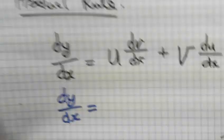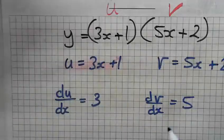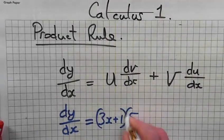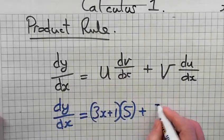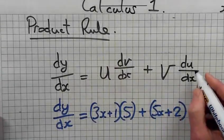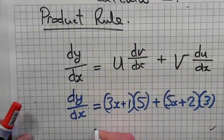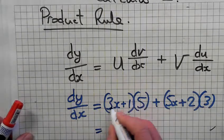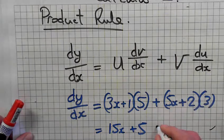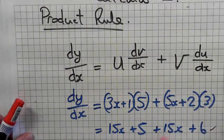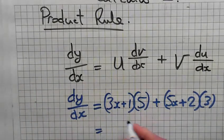On the next line: 5 times all of this is 15x plus 5. And 3 times all of that is 15x plus 6. So 15x plus 15x is 30x, plus 11.